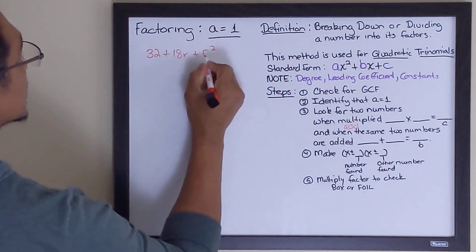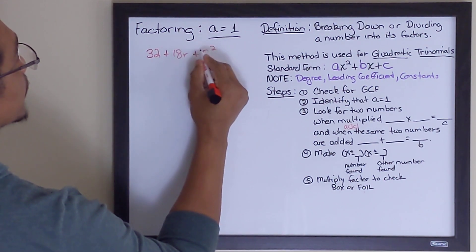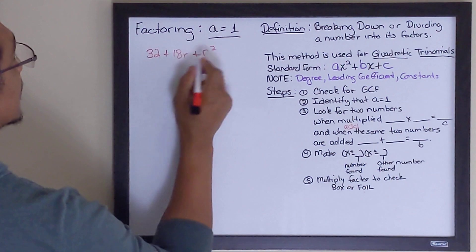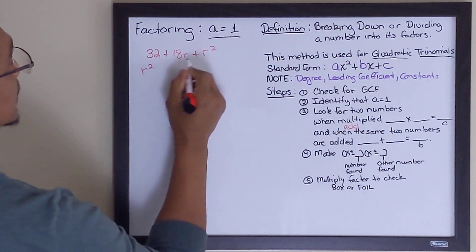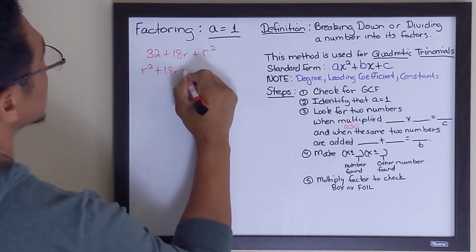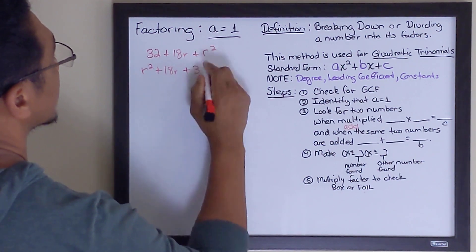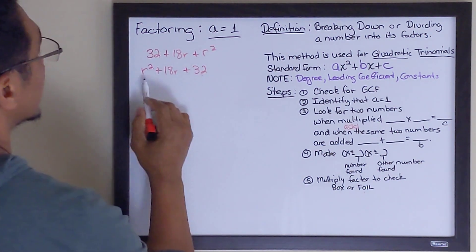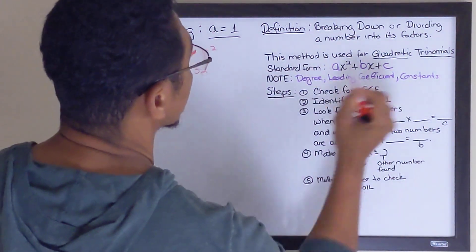So we're going to go ahead and do that. I'm going to put this, which is my leading coefficient and my degree, all in the first term right here. And then the next term is going to be plus 18r. And then the last term is the constant, plus 32. So now, this is in its standard form, which looks like this.